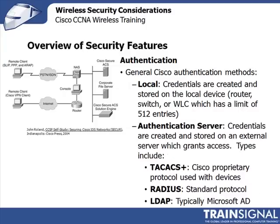As you can see by the device list to the left of the graphic, there are several different authentication methods for Cisco devices. The first is called Local Authentication, which means that credentials are created and stored on the local device — that's where the database is. This can be a router, a switch, or a wireless LAN controller. If you configure local authentication, you have a limit of 512 entries in your database, so it doesn't scale very well, though it can be very good for smaller organizations.